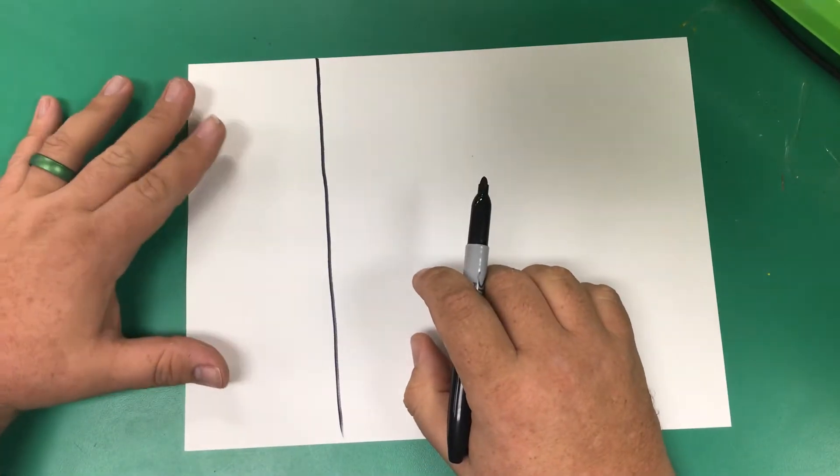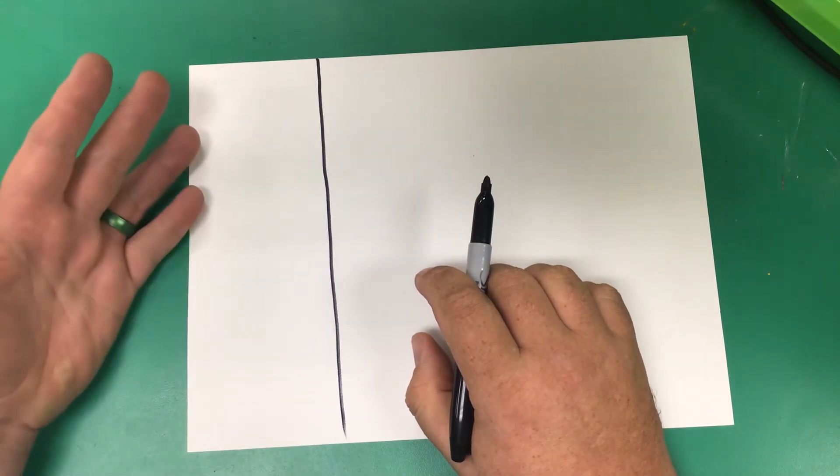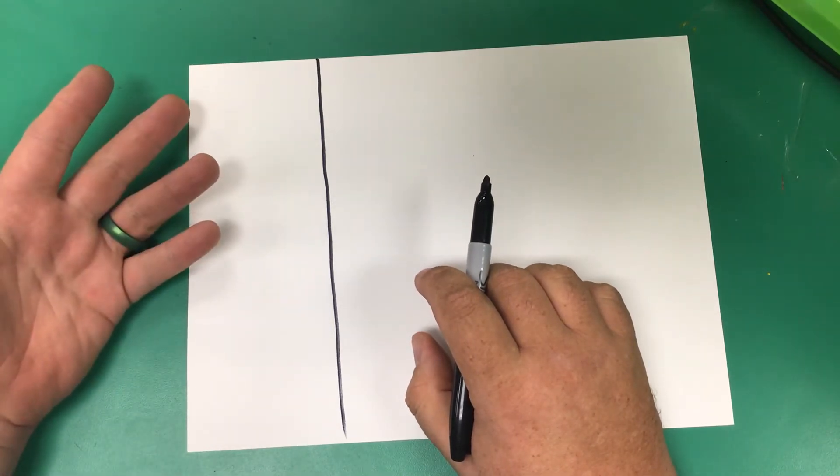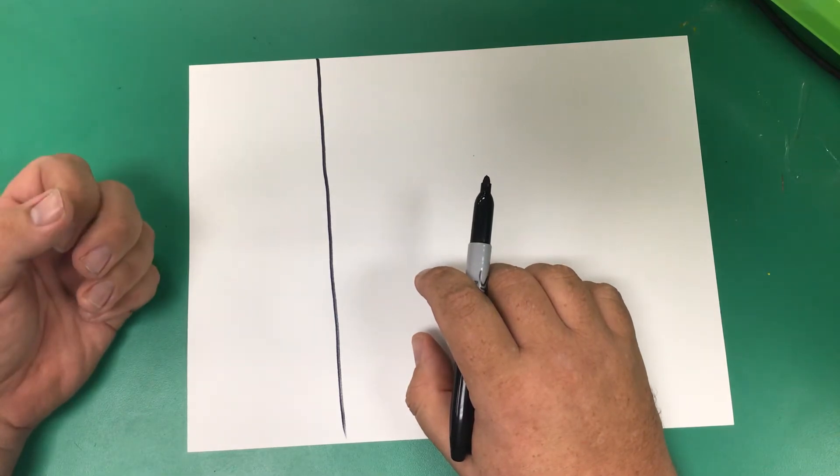But in this first column I want you to make the shapes that you think of when you think of shapes, just the basic shapes that you can name.